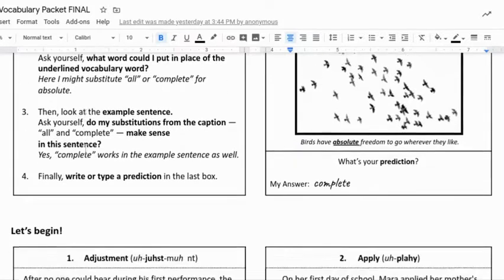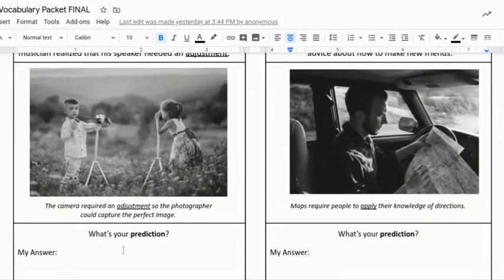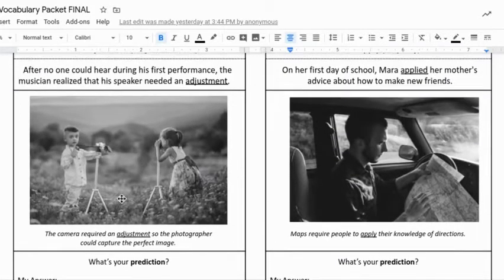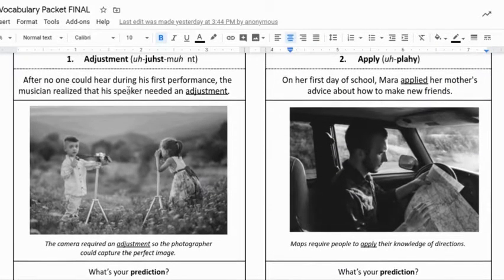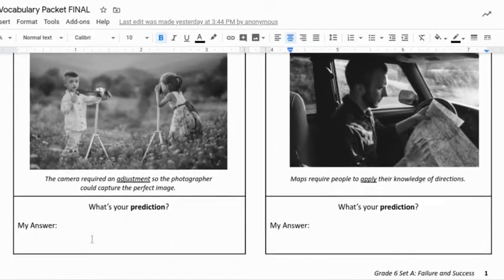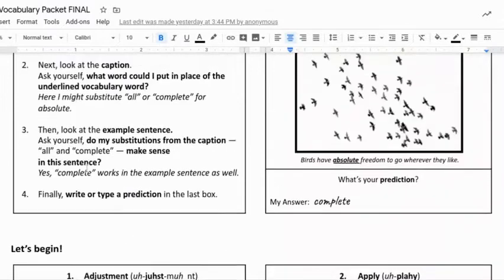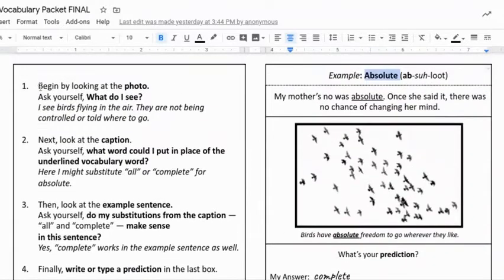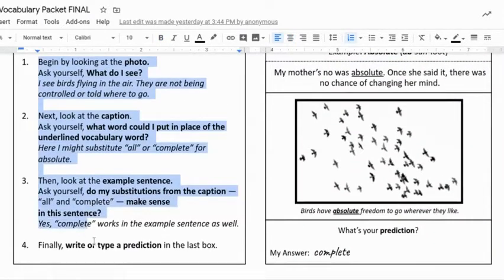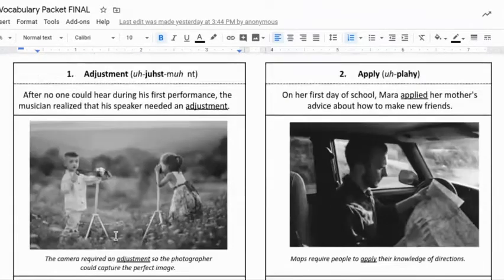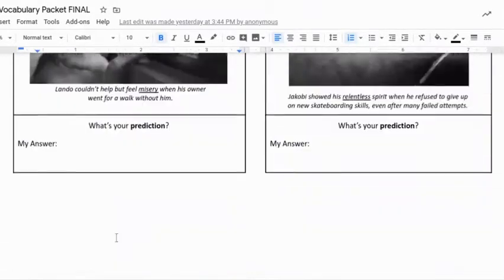But your end result is just a prediction of the word definition using context clues. So you have your sentence, you have a picture, you have another example sentence, and then you make your prediction. Okay, ask yourself these three questions and then make your prediction.